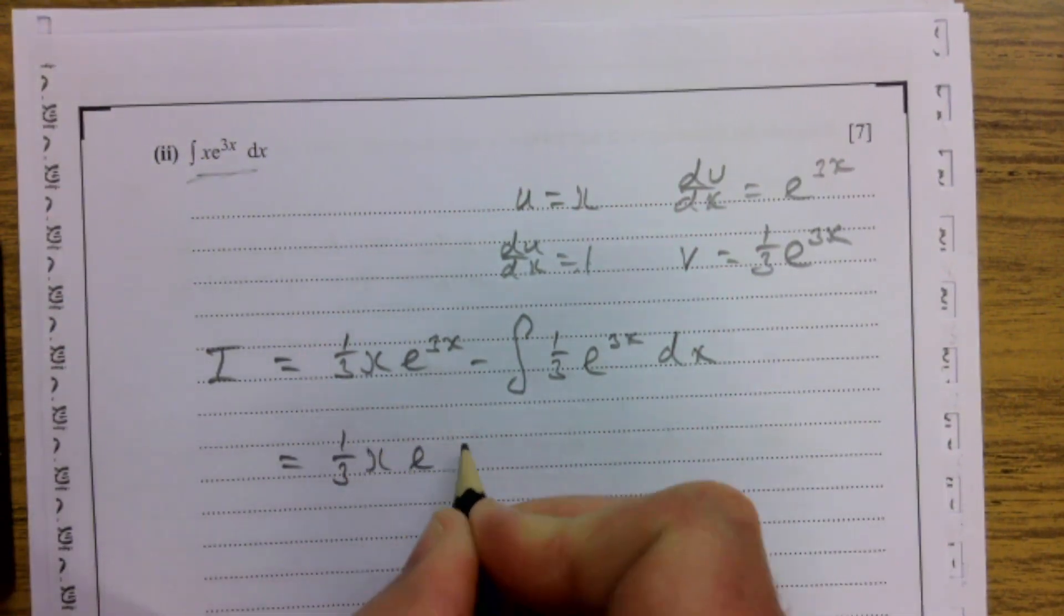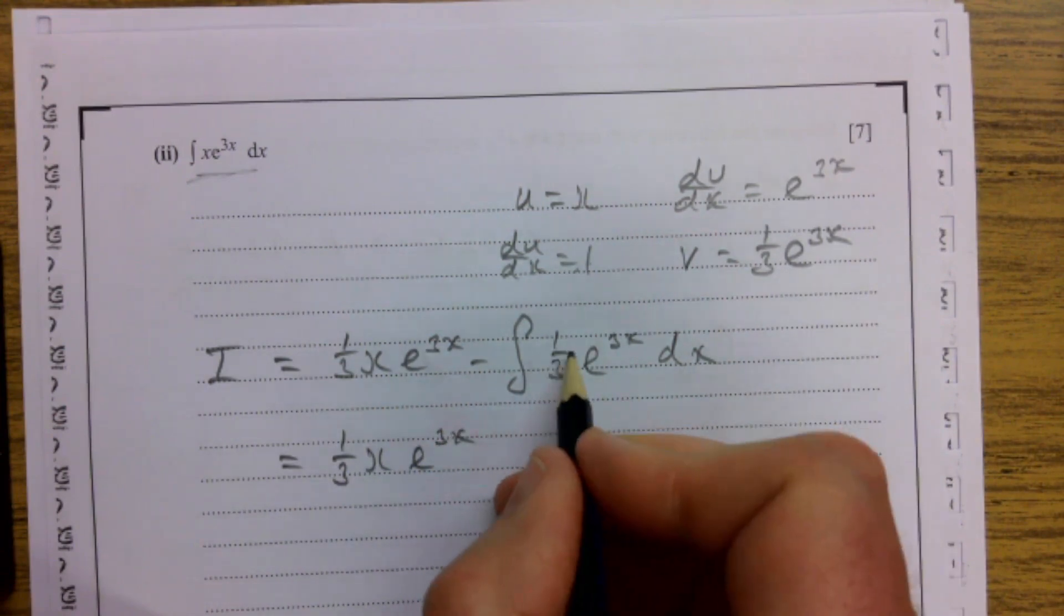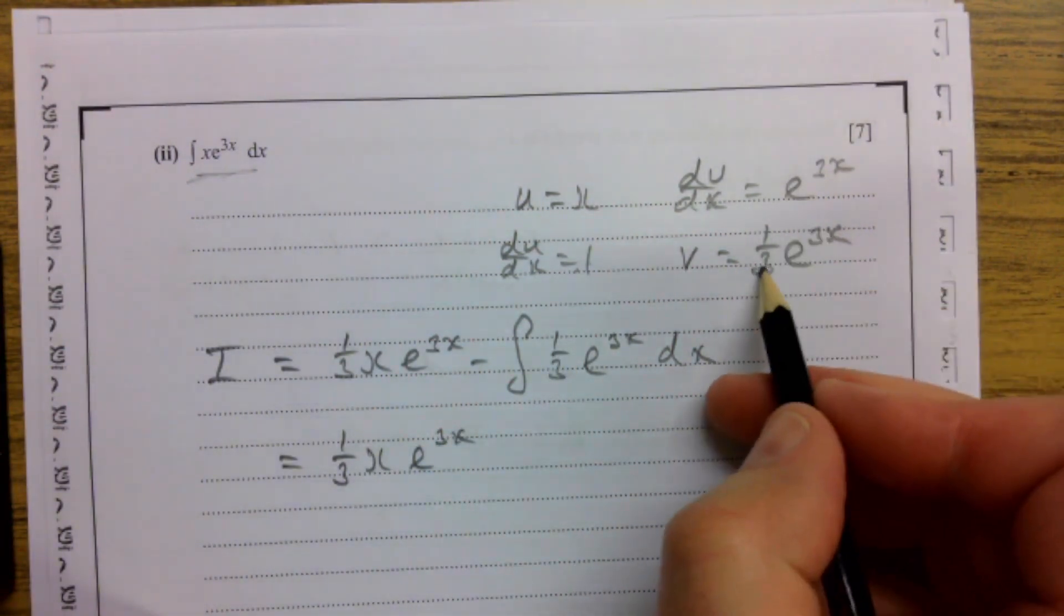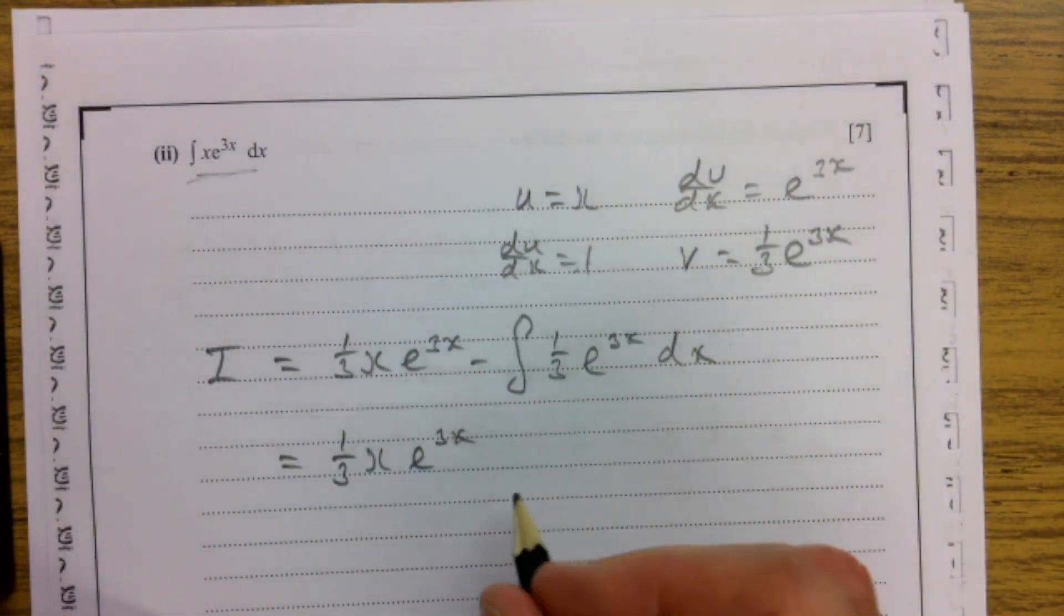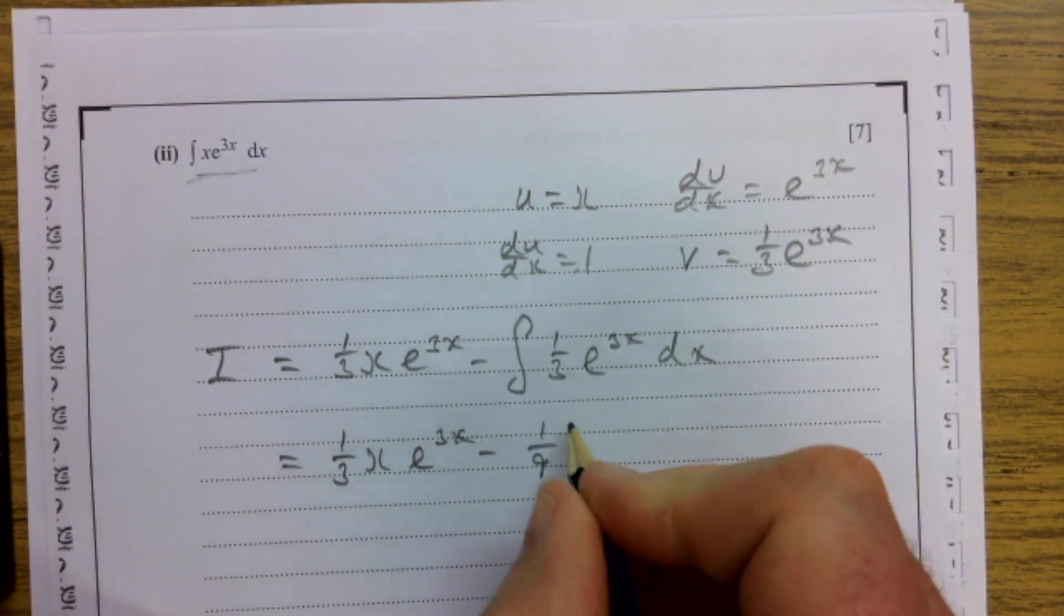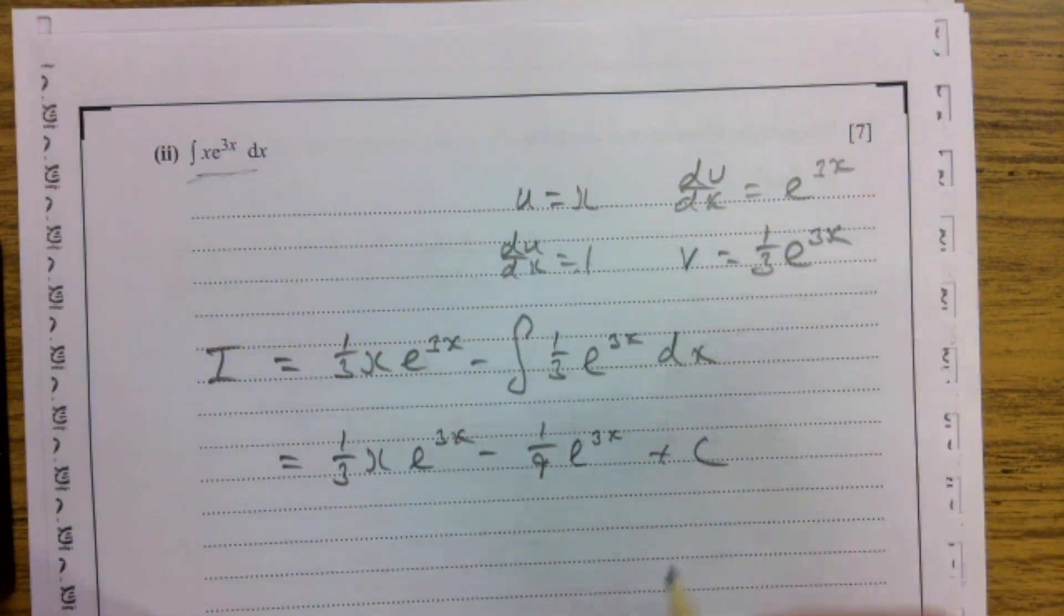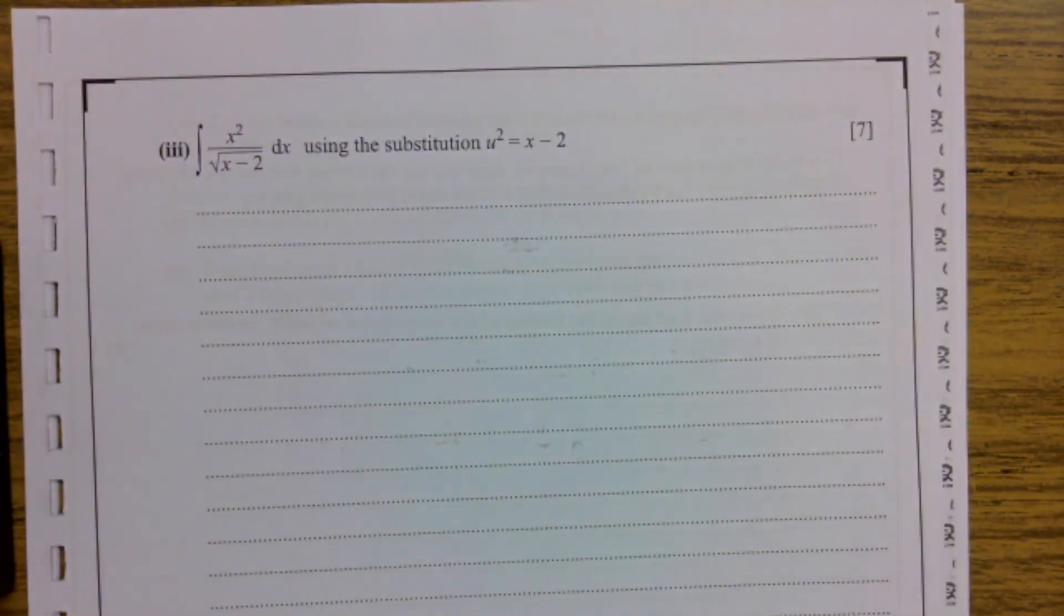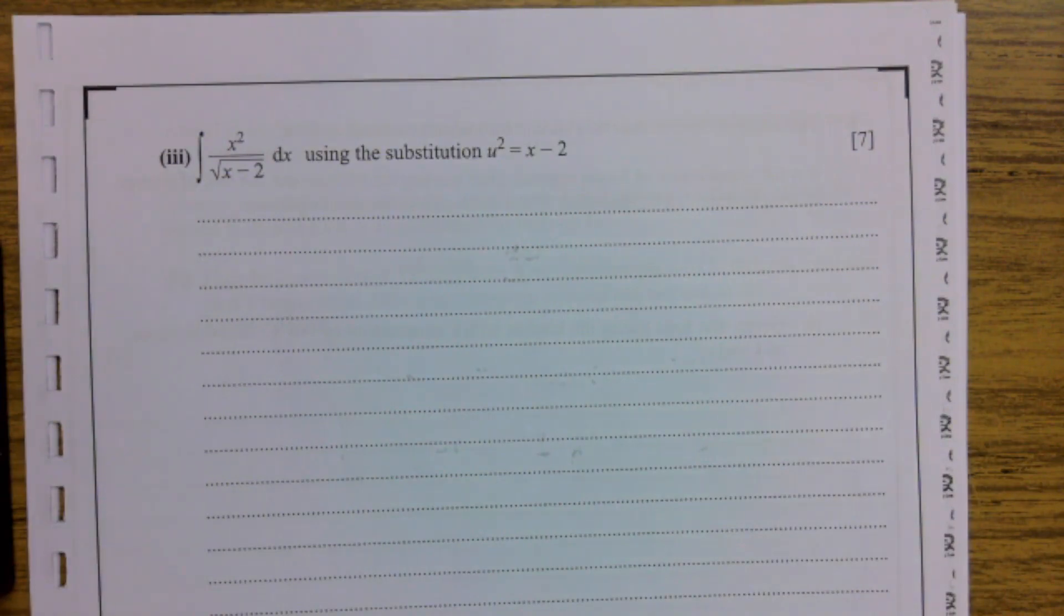That gives me a third x e to the 3x, then integrating this the same way, we get the third so it turns into a ninth, minus a ninth e to the 3x. And as ever, remember your plus c.